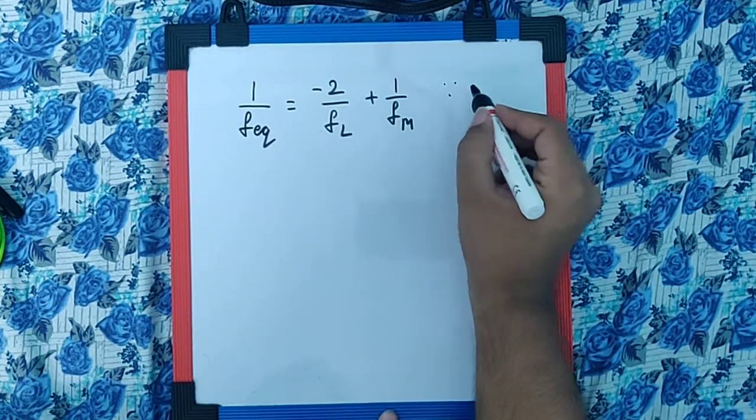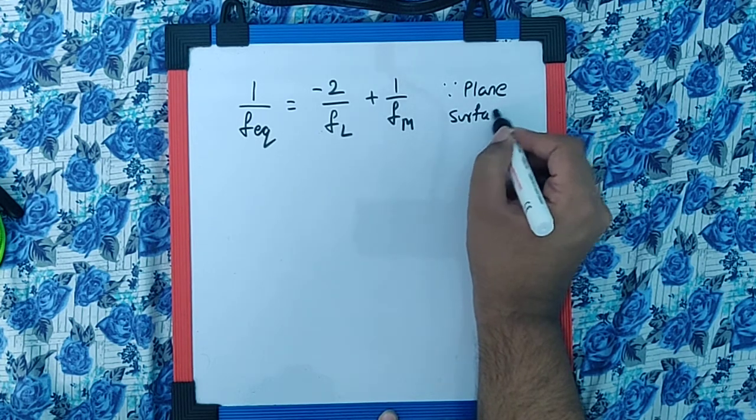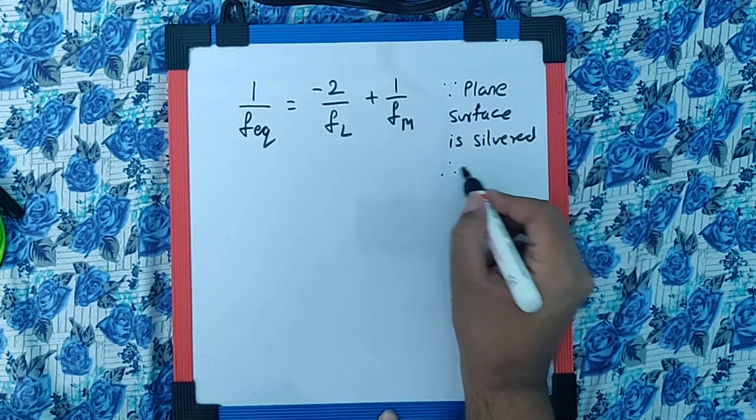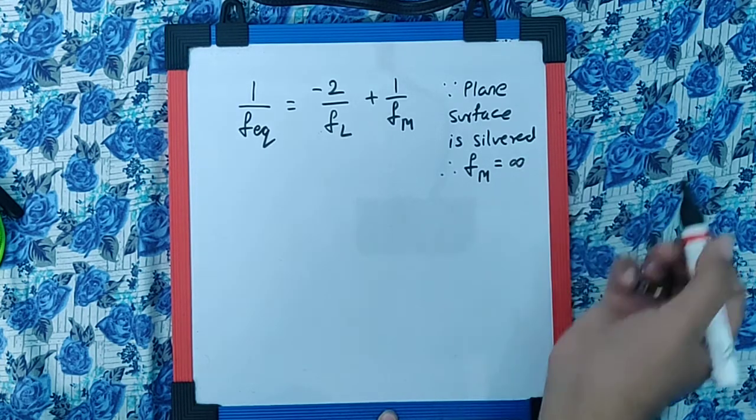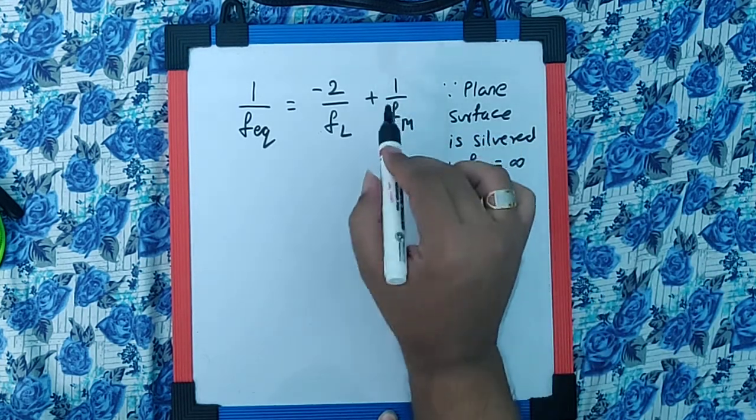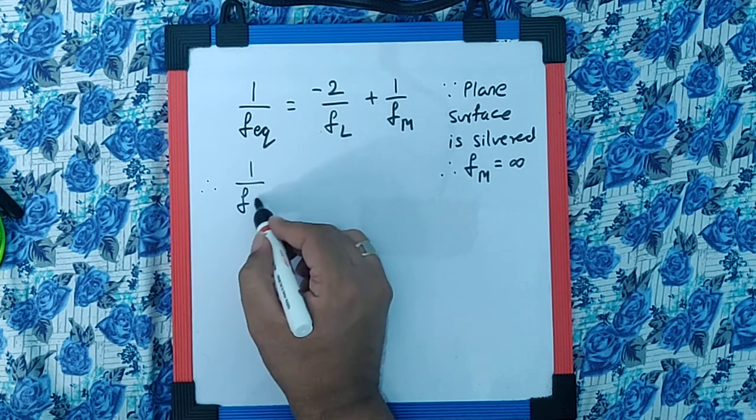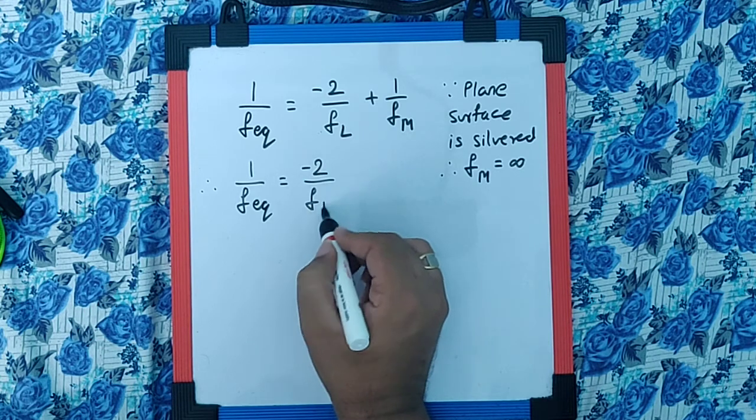Since plane surface is silvered, the focal length of the mirror part is going to be infinite and the reciprocal becomes 0. So the equivalent focal length becomes negative 2 times the focal length of the lens.